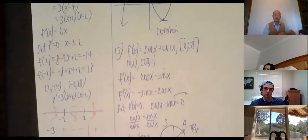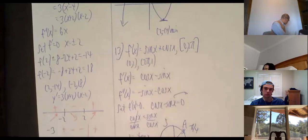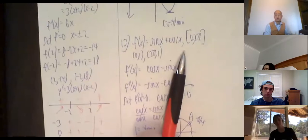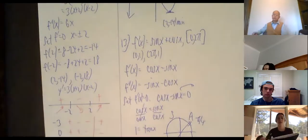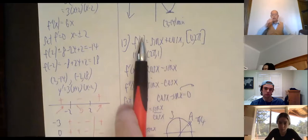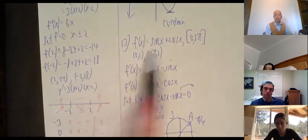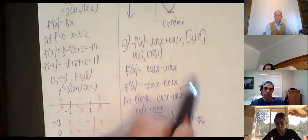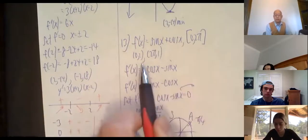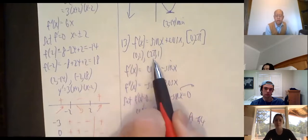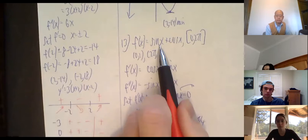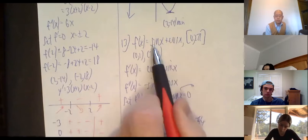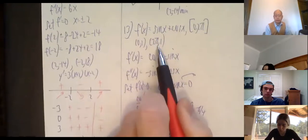Next, number 13: f(x) = sin x + cos x on the interval [0, 2π] — one full period. Since it's a closed interval, I need to plug in the endpoints. f(0) = sin(0) + cos(0) = 0 + 1 = 1. Since the period is 2π, f(2π) = 1 as well.